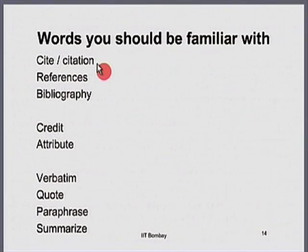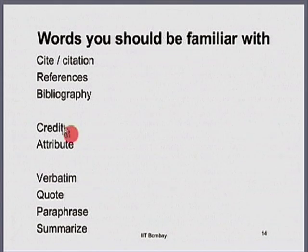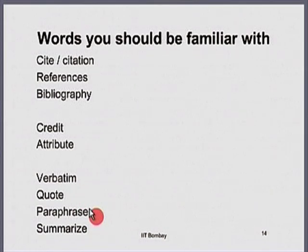Some words you need to be familiar with. You will see the words cite and citation very often, and these go hand in hand with references and bibliography. You will see words such as credit and attribute — meaning you are letting the reader know that the material you are using belongs to somebody else and you have borrowed it. You are giving credit to the original source or attributing your work to the original source. Verbatim means directly copying, and paraphrase and quote are terms we will spend the most time on.